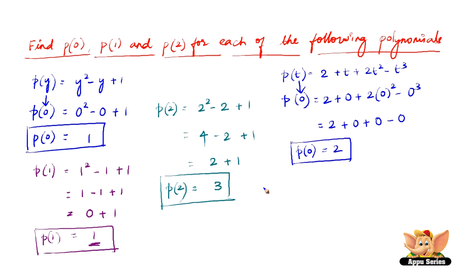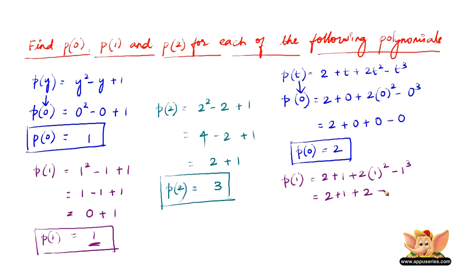Now let us find p of 1. p of 1 is 2 plus 1 plus 2 into 1 squared minus 1 cubed, which is 2 plus 1 plus 1 squared is 1 so 2 into 1 is 2, minus 1 cubed is 1. We have plus 1 minus 1 cancelling, and 2 plus 2 is 4. So p of 1 is 4.